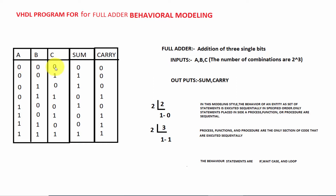The 8 possible combinations are: 0 0 0, 0 0 1, 0 1 0, 0 1 1, 1 0 0, 1 0 1, 1 1 0, and 1 1 1. These are all 8 possible input combinations.